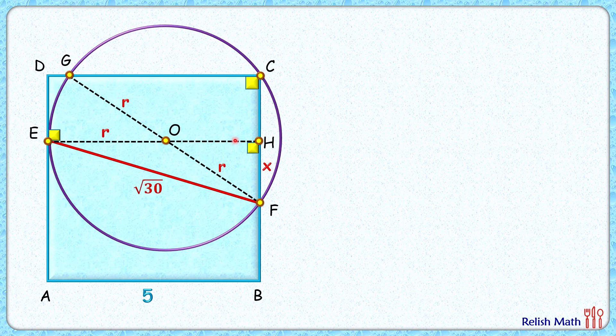That's it. Now we'll take this pink right angle triangle. First, applying Pythagorean theorem in this, we'll get (5-r)² + x² = r².